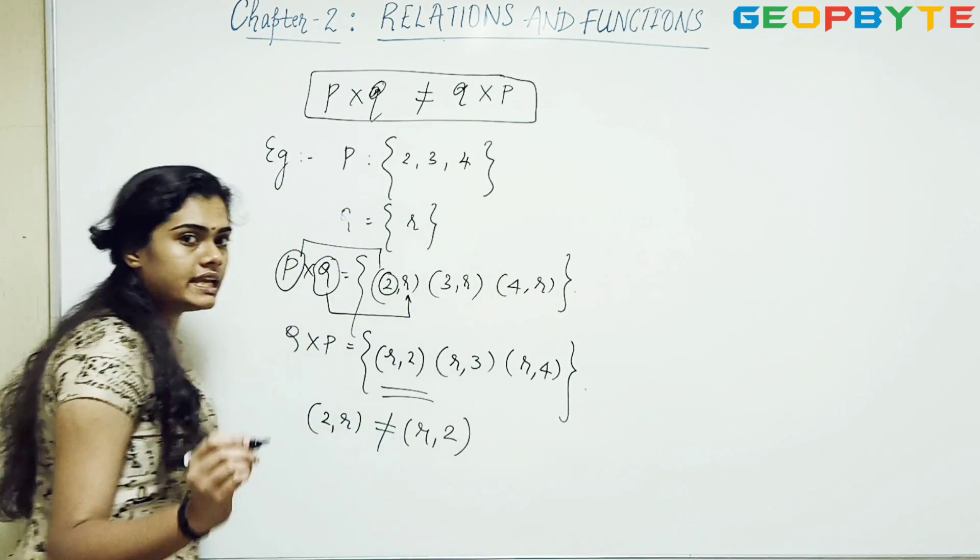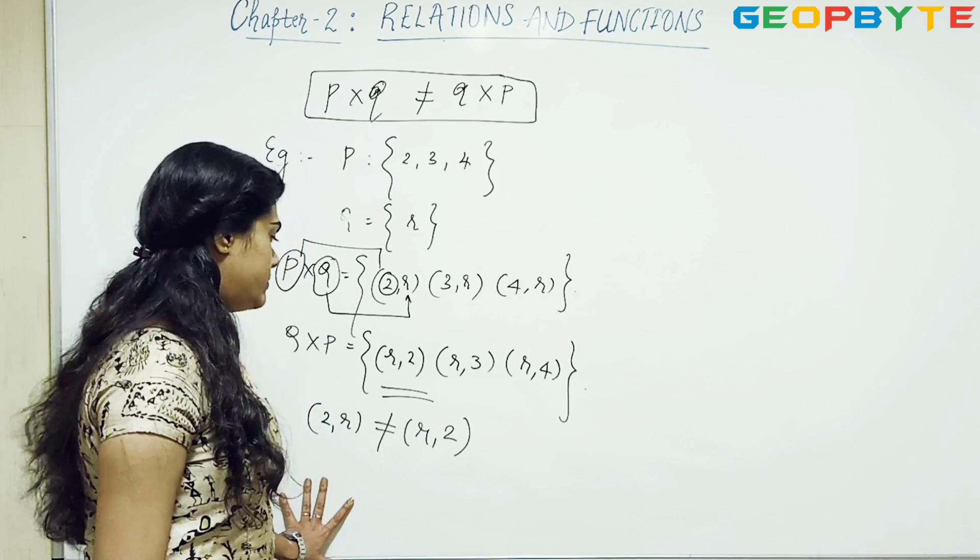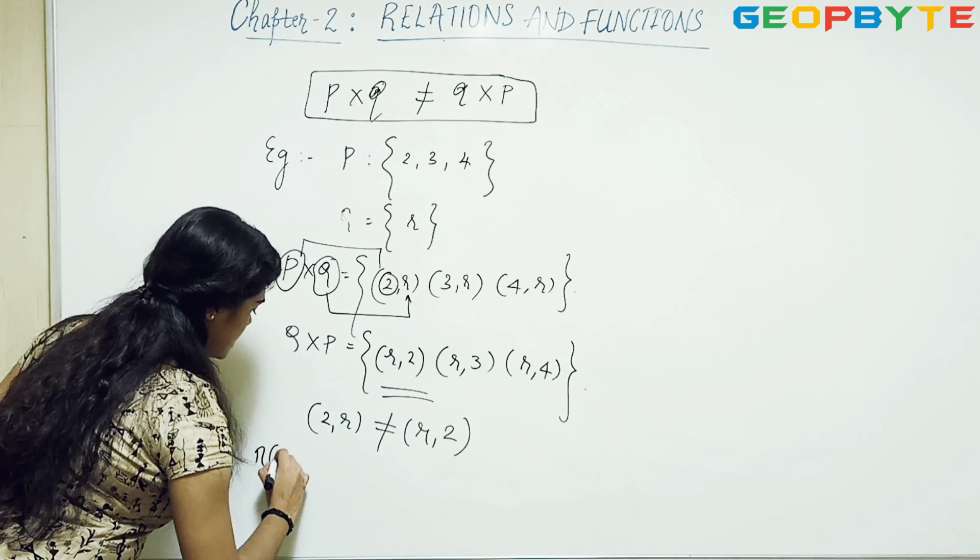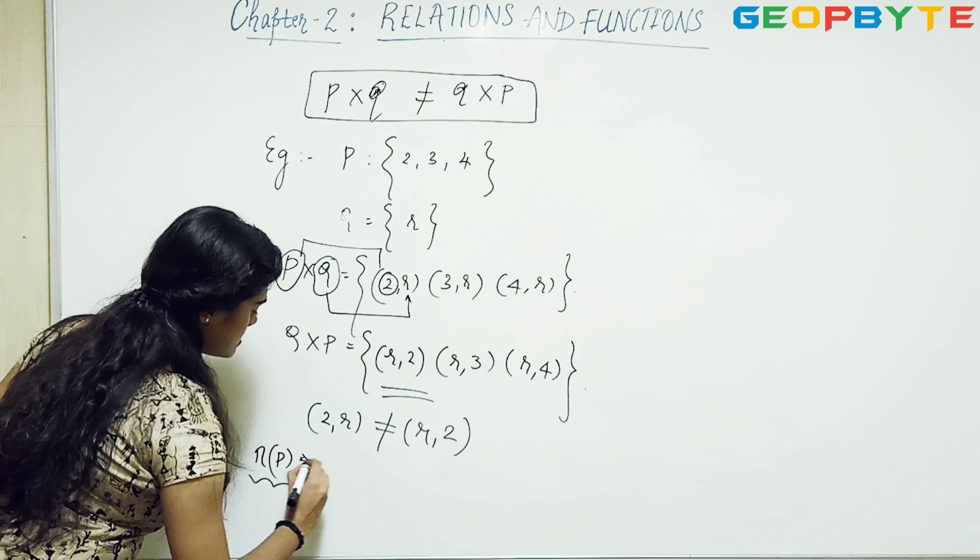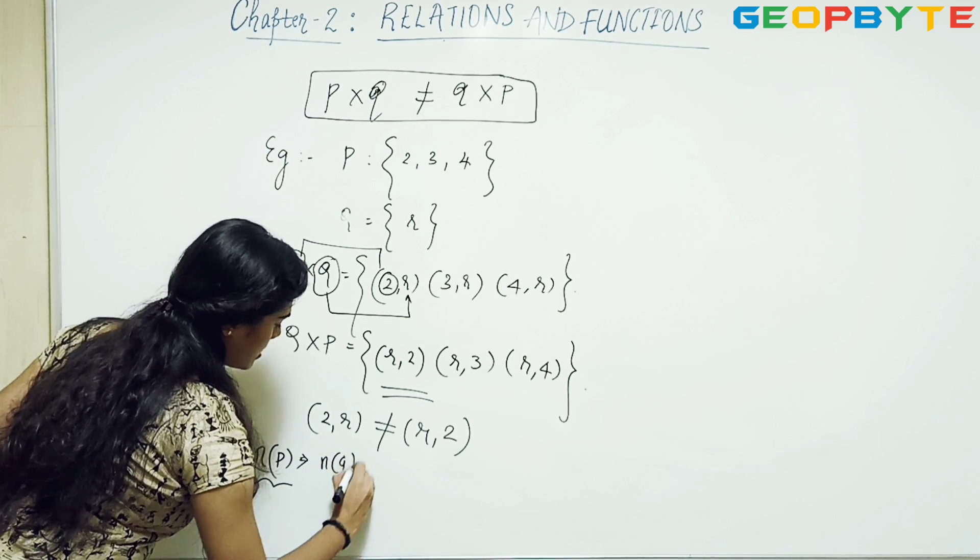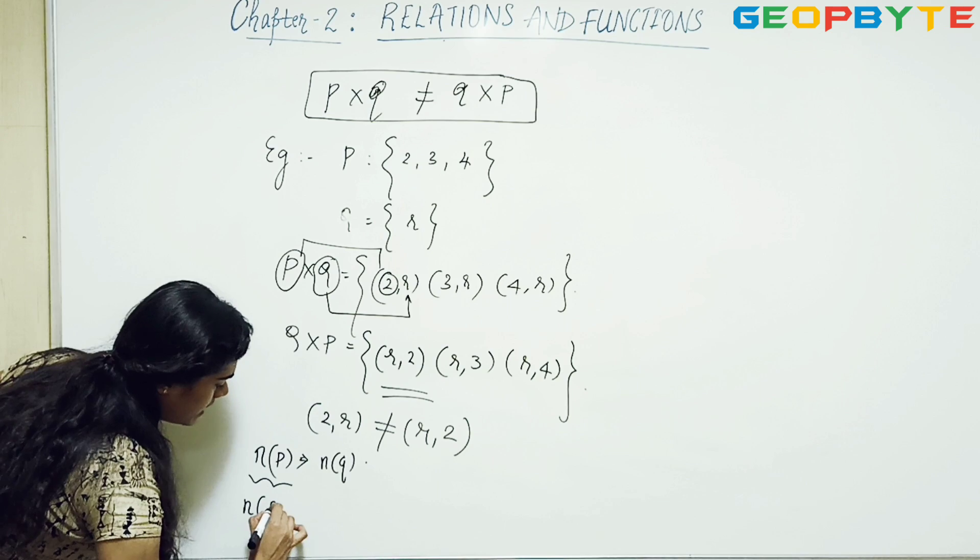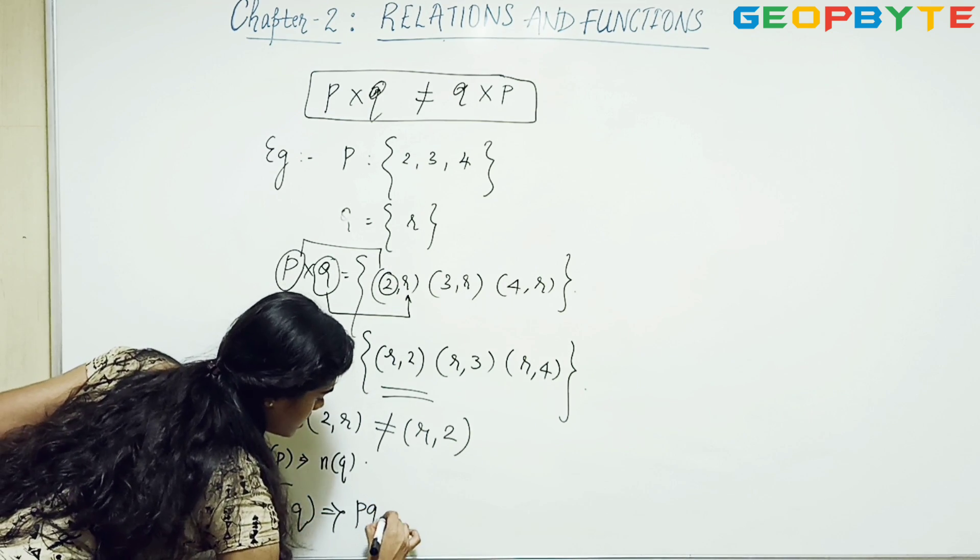They are only equal if the corresponding elements from the sets are equal. So if I am having number of elements in set P represented by this and Q represented by this, then number of elements or the ordered pairs will be p×q.